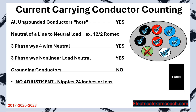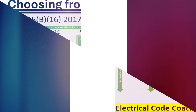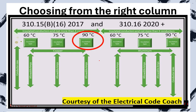No adjustment will be made if we have nipples that are 24 inches or less. Imagine we have a panel on the right and a panel on the left — we run a short nipple that's 24 inches or less; this does not count in our bundling adjustment. Now, when it comes to choosing from the right column: up until this point we've chosen most of the time from the 75 degrees C column, but 99% of the time when doing bundling adjustments or temperature corrections, we're going to choose from the 90 degrees C column.